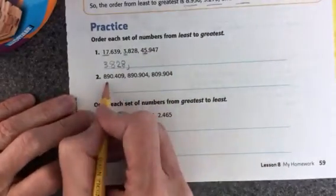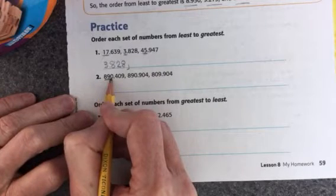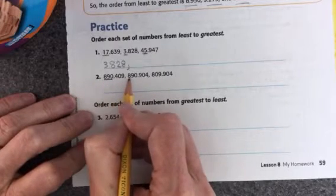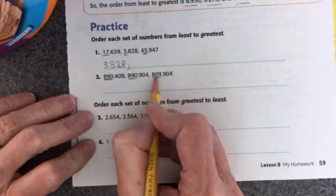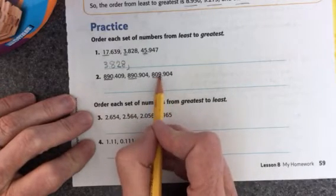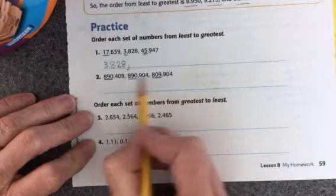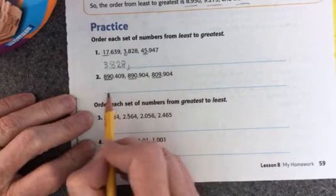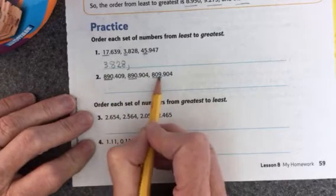Okay, looking at the next one. I'm going to look at my number in front of the decimal again. I have 890, 890, and 809. Somebody tried to trick you by just reversing those two numbers. You choose which number is the smallest and write it first. That will be this one.